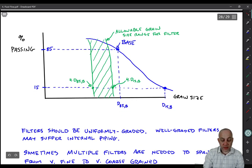So well-graded filters may suffer internal piping. That's where we lose the fines.